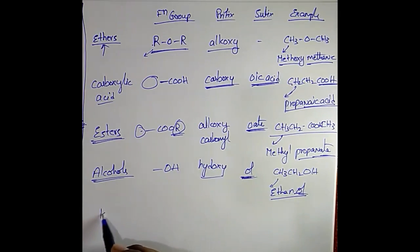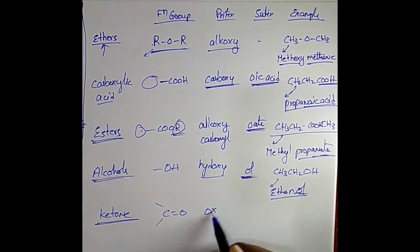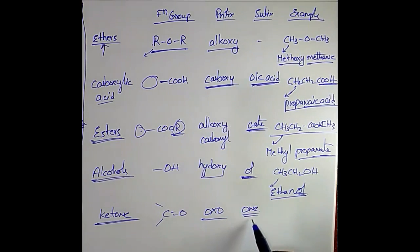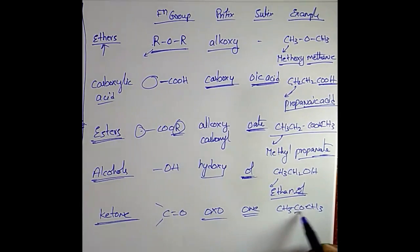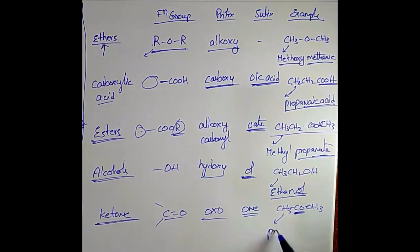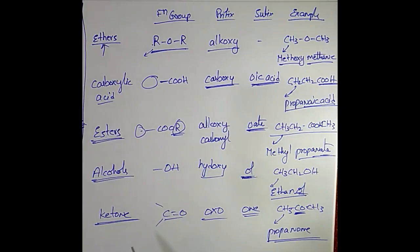For ketones, the functional group is C=O (carbonyl between two carbon chains). The prefix is 'oxo' and the suffix is '-one'. For example, CH3–CO–CH3 — the functional group is C=O, and with three carbons it is called propanone. These are the important compounds of carbon with hydrogen and their prefixes and suffixes.